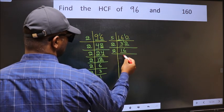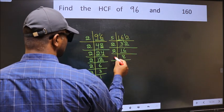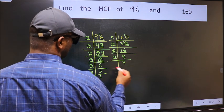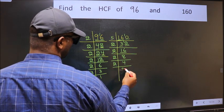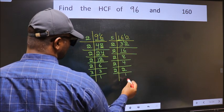Now 16 is 2 times 8. 8 is 2 times 4. 4 is 2 times 2. 2 is a prime number so 2 times 1 is 2.